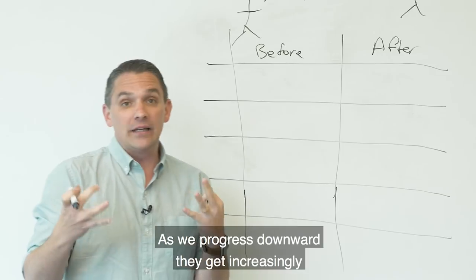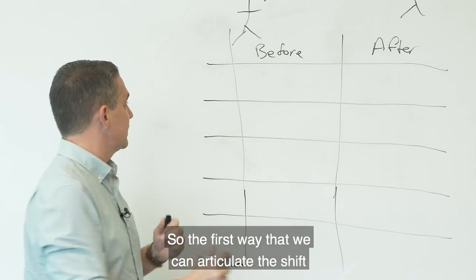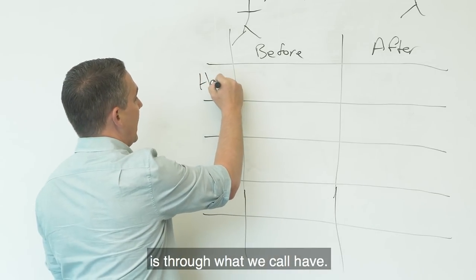There are five ways that we begin to articulate this shift from the before state to the after state that I'll go through. As we continue downward, as we progress downward, they get increasingly more and more powerful.